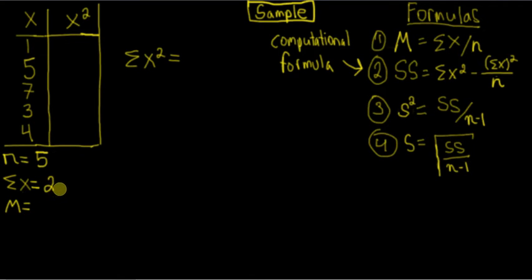That's giving us 20 for our sum of X. M, that's the mean. Here we know our formula for the mean is the sum of X divided by little n, so we're going to do 20 divided by 5 equals 4.